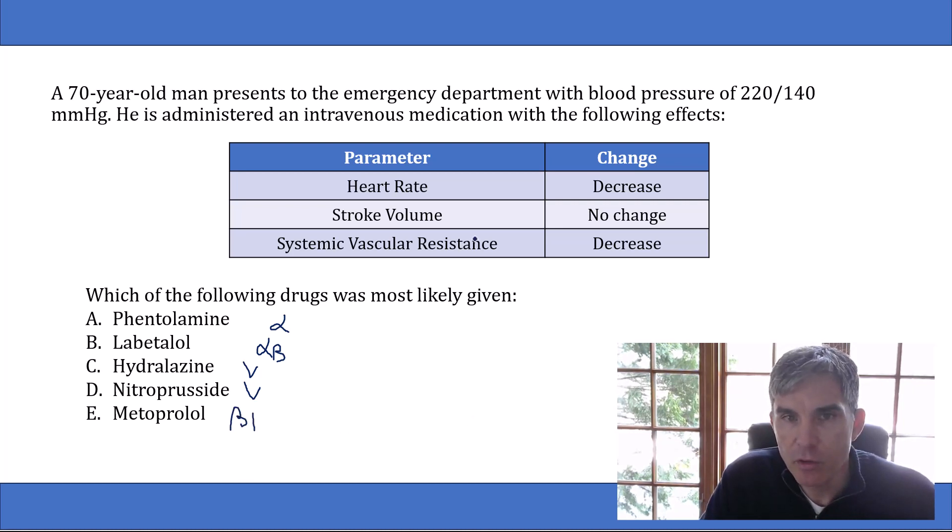So if we look at the question, we see that whatever drug was given decreased heart rate. Well, the only drugs on our list that decrease heart rate are the beta blockers. So right away, we know the answer can't be phentolamine, hydralazine, or nitroprusside.